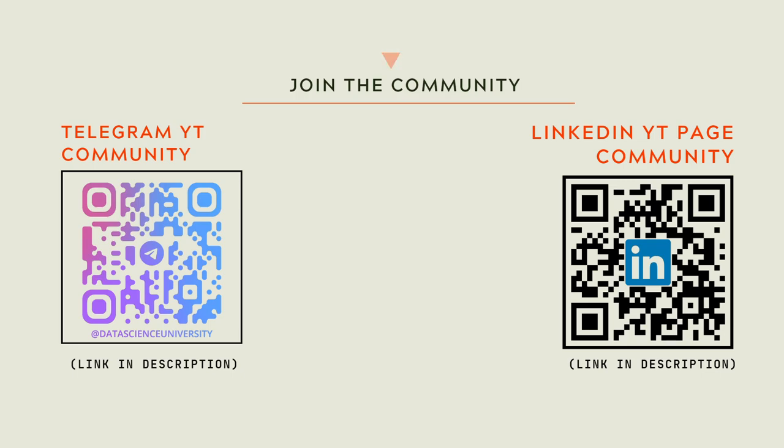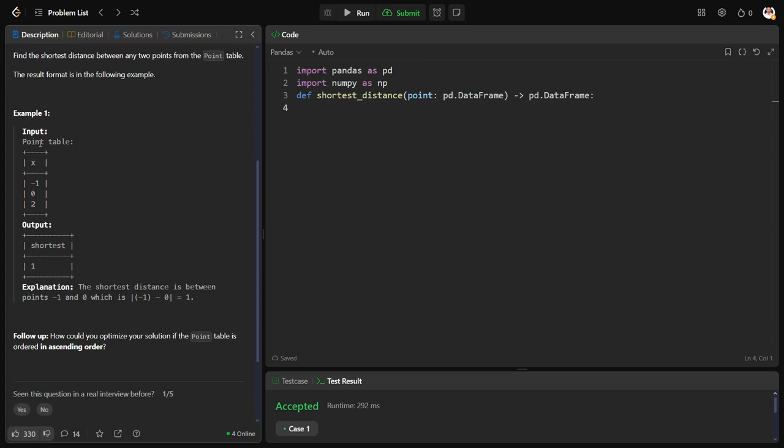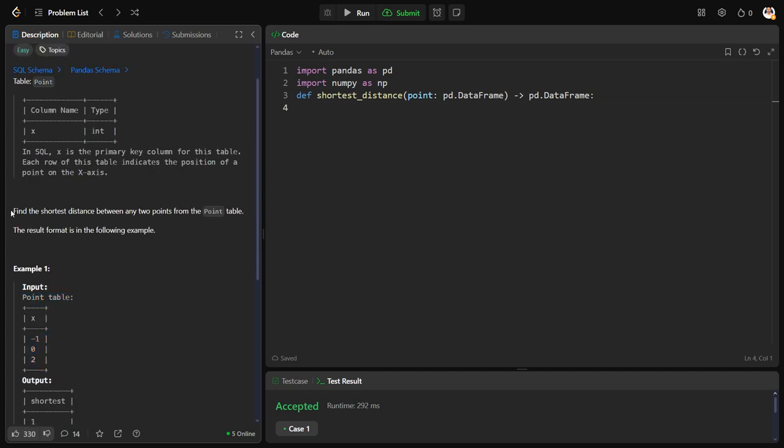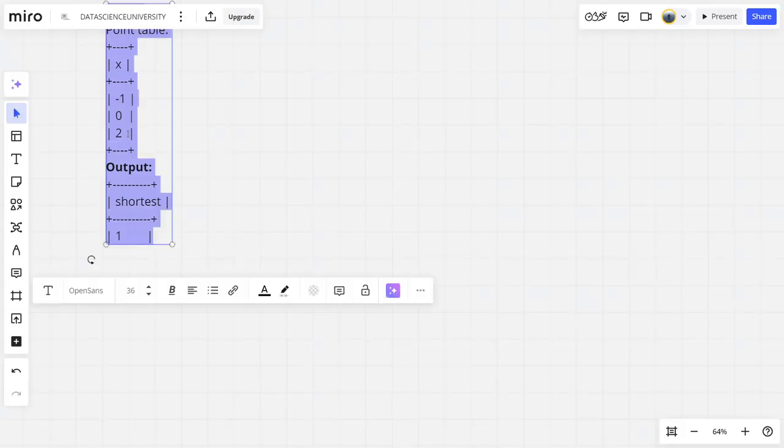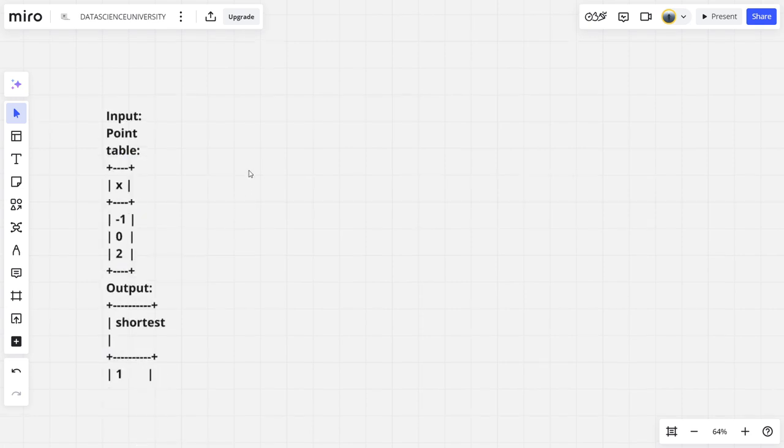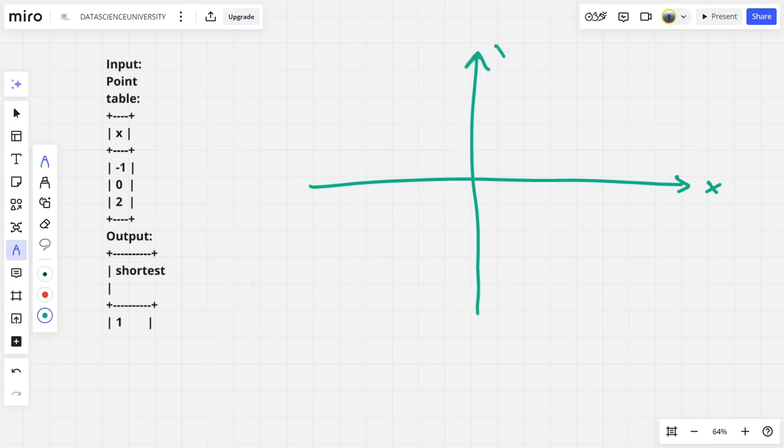Now let's solve together the problem. They have given a table with point x: minus 1, 0, 2, and so on. What they're asking? Find the shortest distance between any two points on the points table. Let me copy it down.